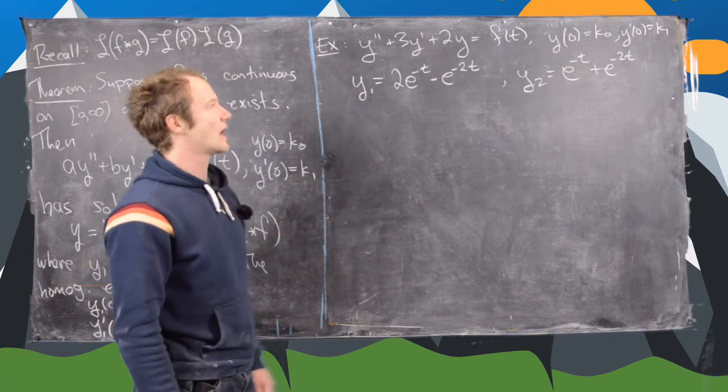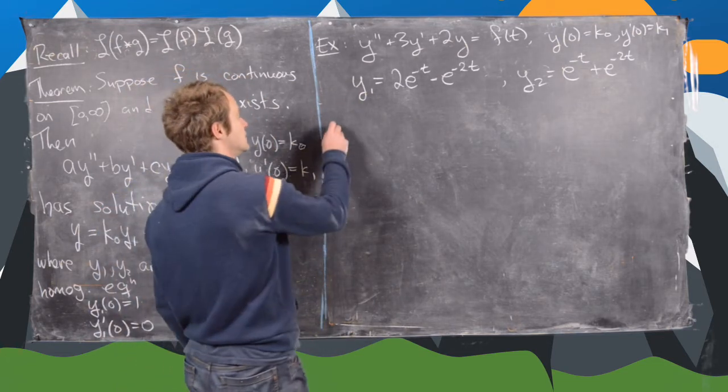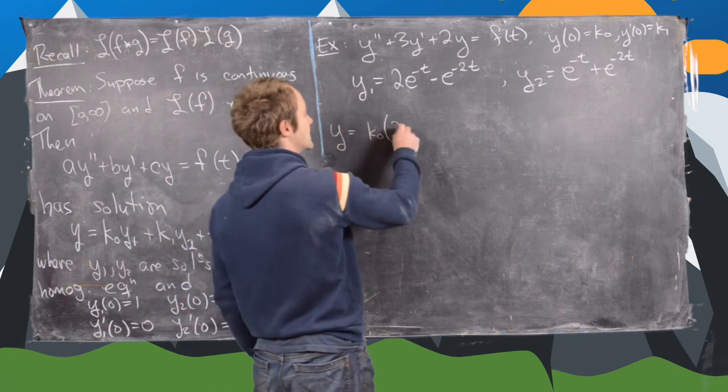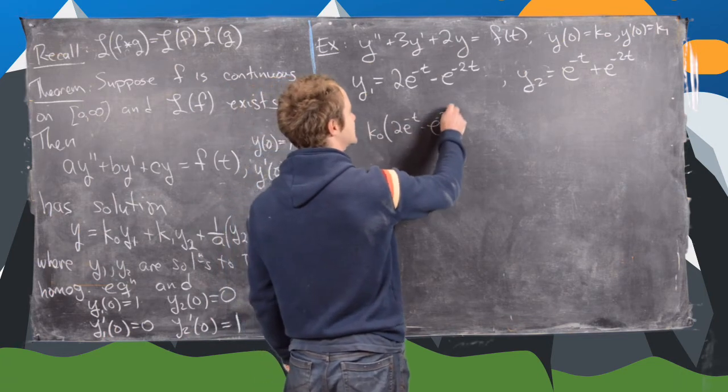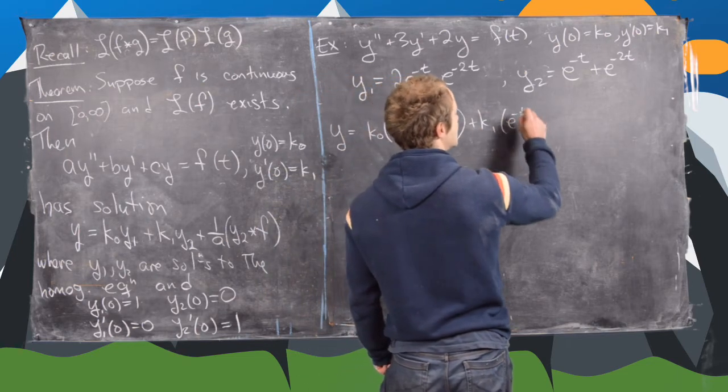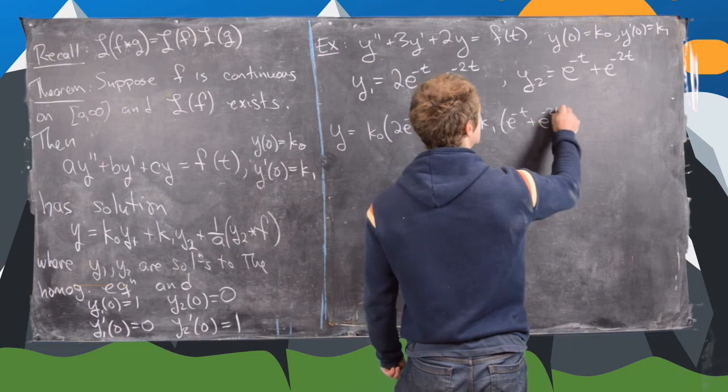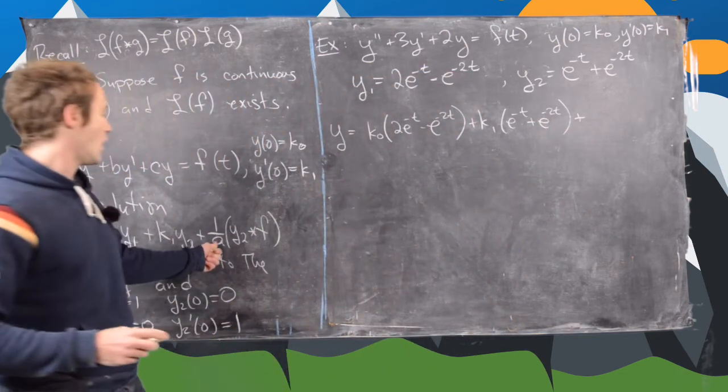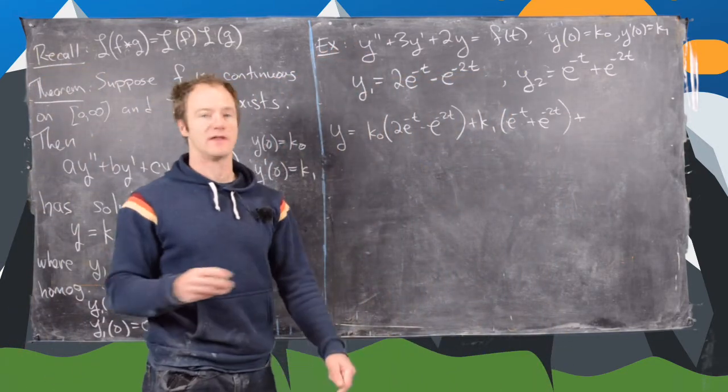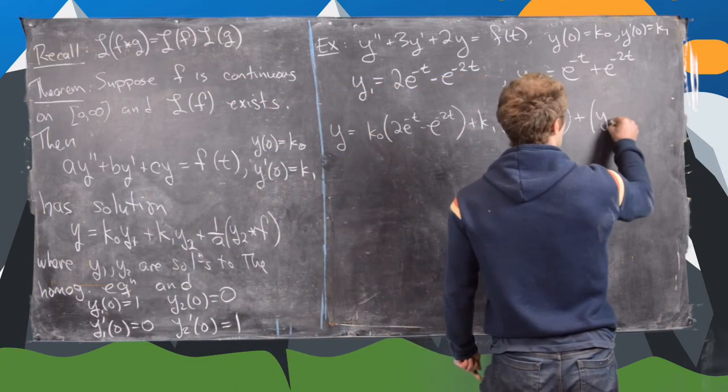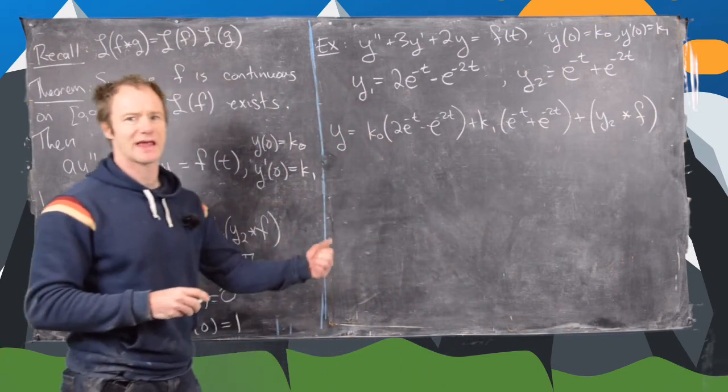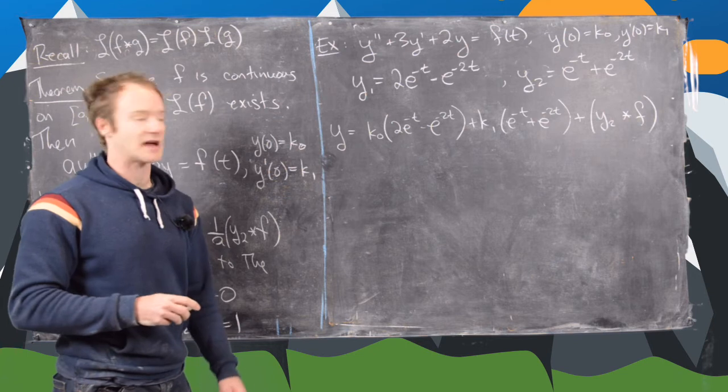So now notice from here, we can just go ahead and write down the solution. So notice that y will be equal to k0 times y1, so we have k0 times 2e to the minus t minus e to the minus 2t, plus k1 times y2, so that'll be e to the minus t plus e to the minus 2t. And then it's going to be plus 1 over a and then this convolution. So we have plus 1 over a, but notice a is equal to 1 in this case. So we just have the convolution of y2 with f. Obviously we're doing f as an arbitrary function, so we can't calculate that explicitly. But let's write down a couple more steps here.